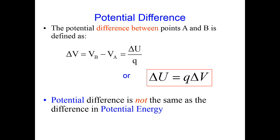The main trick when we move from a uniform gravitational field to a uniform electric field is the difference between positively and negatively charged particles. If we have a positively charged particle, it accelerates in the direction of the electric field — it moves with the electric field. That means the potential energy is decreasing and the kinetic energy is increasing. If you move the positively charged particle against the electric field, the potential energy is increasing, just like pushing it uphill, and the kinetic energy is decreasing.